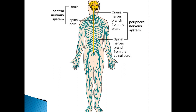Conversely, once the brain has made sense of that sensory information, it can then create impulses or commands to various muscles, organs, and glands around the body. Those impulses are sent from the brain down the spinal cord and out through the peripheral nervous system to the relevant muscles, glands, and organs that need to be activated. We call that the motor pathway — the pathway leading away from the brain.